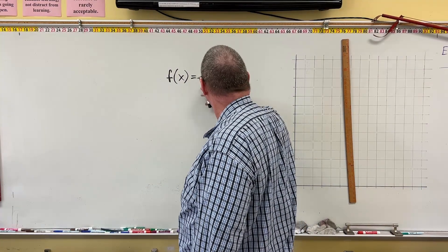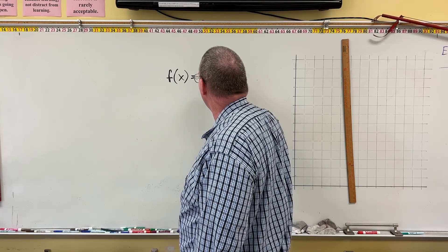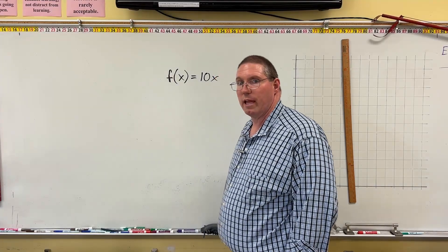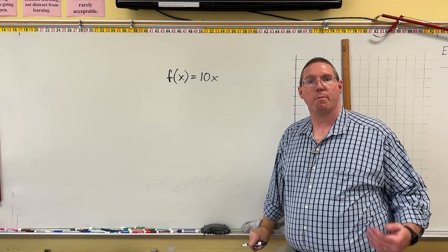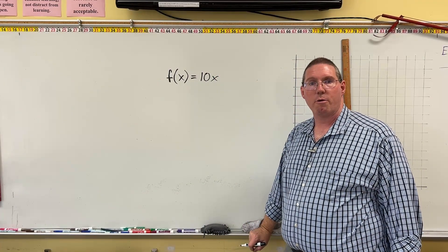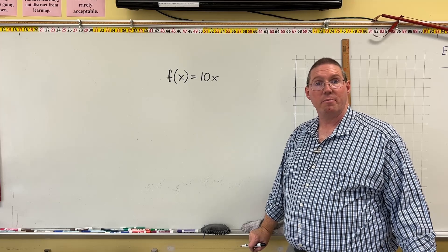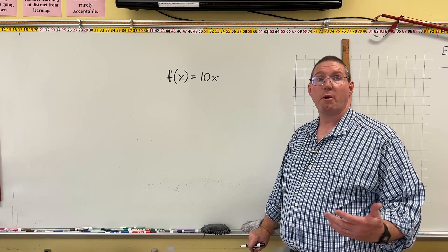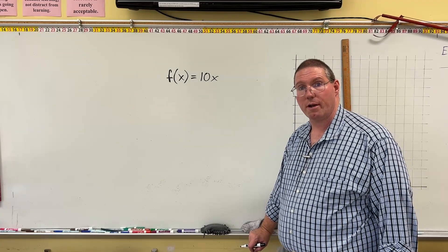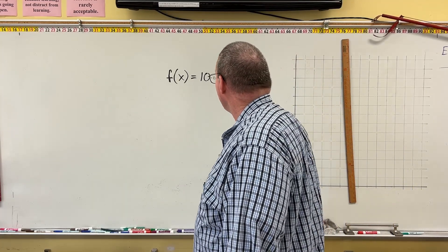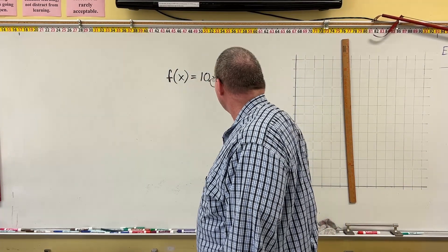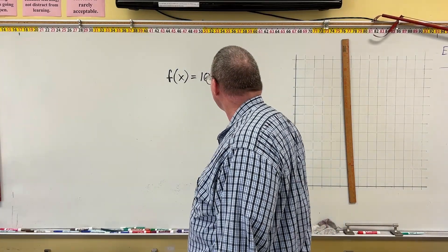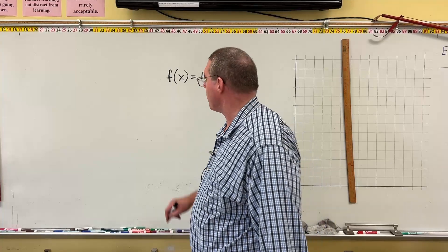We might have a function like F(x) = 10x. This relates to a previous example about a person who worked hours and made $10 an hour — if they worked 17 hours they got $170, if they worked 23 hours they got $230. This situation is a function, so let's say the input is 17 hours.